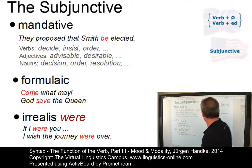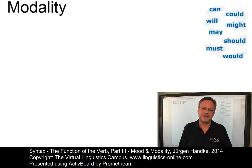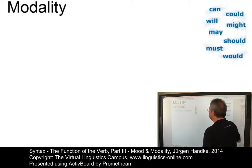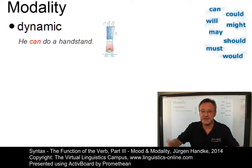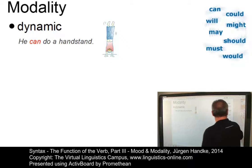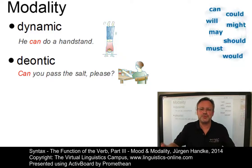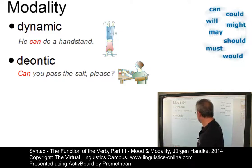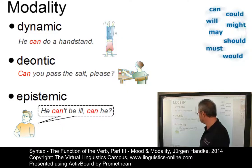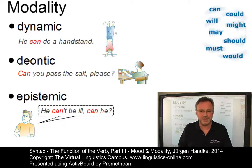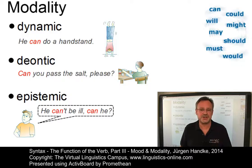So much for the discussion of mood. Let's now continue with modality. In present-day English, three kinds of modal meaning or modality can be distinguished. Let's illustrate these using the modal auxiliary 'can': dynamic or factual modality ('he can do a handstand', meaning he is able to); deontic modality, denoting how things ought to be ('can you pass the salt, please?'); and epistemic modality ('he can't be ill, can he?'). All three kinds are also commonly expressed by means other than modal auxiliaries.